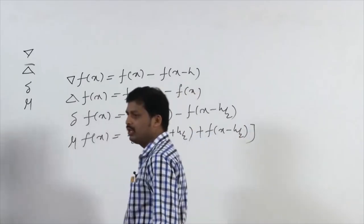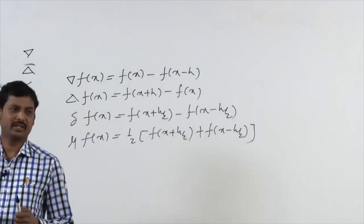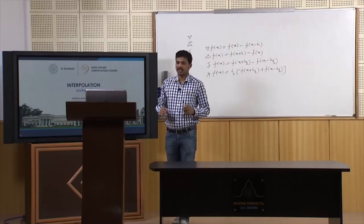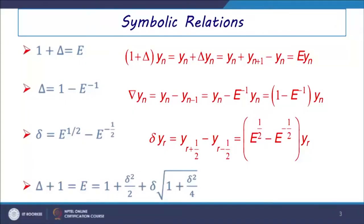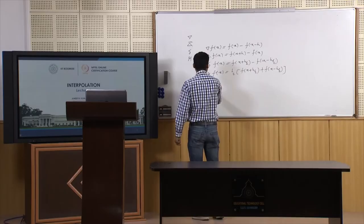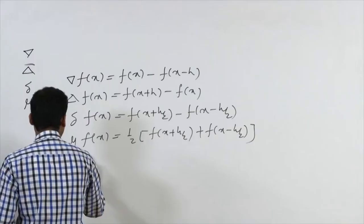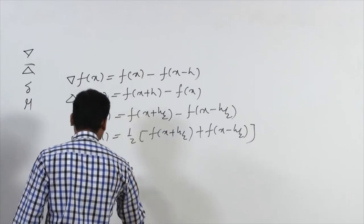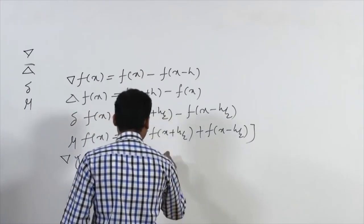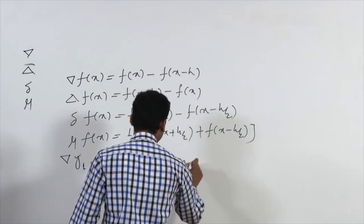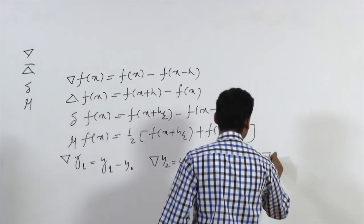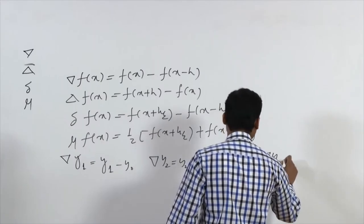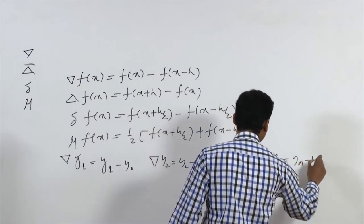Whenever we apply these four difference operators, we also use the shift operator and differential operator. Sequentially, nabla can be applied as: nabla(y₁) = y₁ − y₀, nabla(y₂) = y₂ − y₁, and likewise nabla(yₙ) = yₙ − yₙ₋₁.